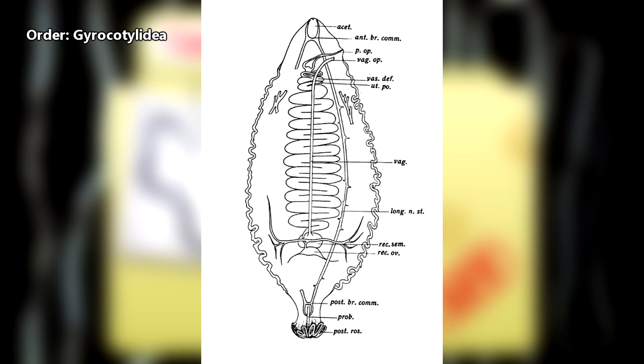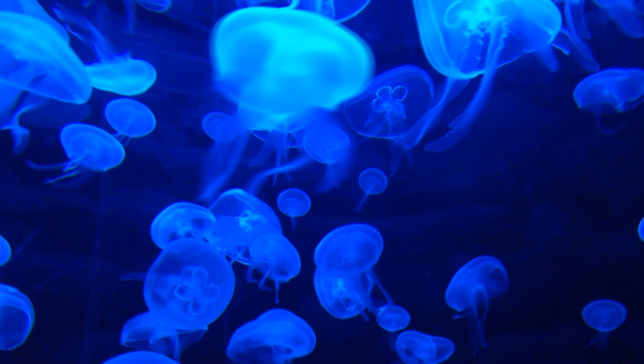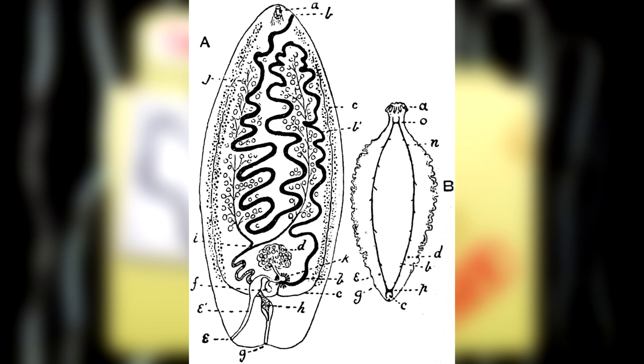There are also tapeworms with a rosette structure at their rear ends, used for holding onto their hosts. These tapeworms may not require an intermediate host, or they may use jellyfish as intermediate hosts. These tapeworms are commonly found in pairs, so it's believed they may require cross-fertilization in order to produce viable offspring.